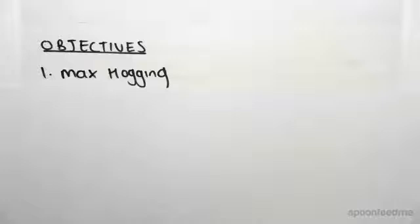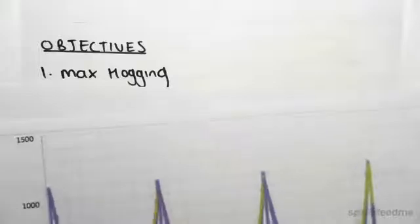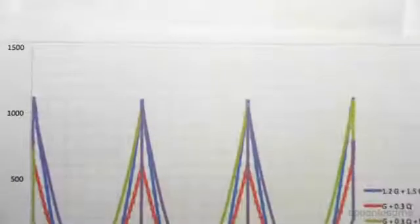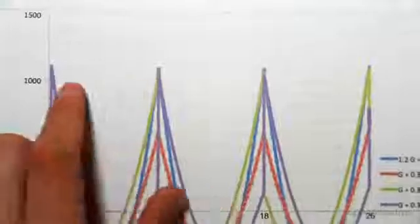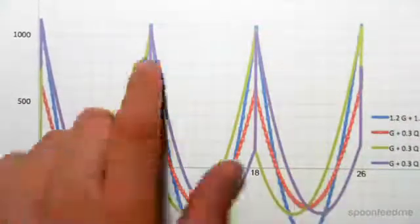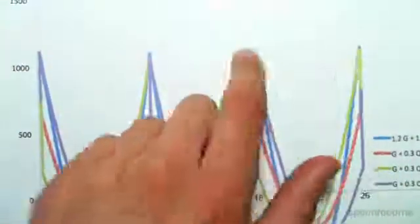Hey guys, the objective of this video is to look at the reinforcement required for the maximum hogging. We find this value straight from the envelope. Looking at our bending moment envelope, the maximum hogging occurs at the supports, so at 0, 8, 18, and 26 meters. These are our supports and these are the hogging moments.